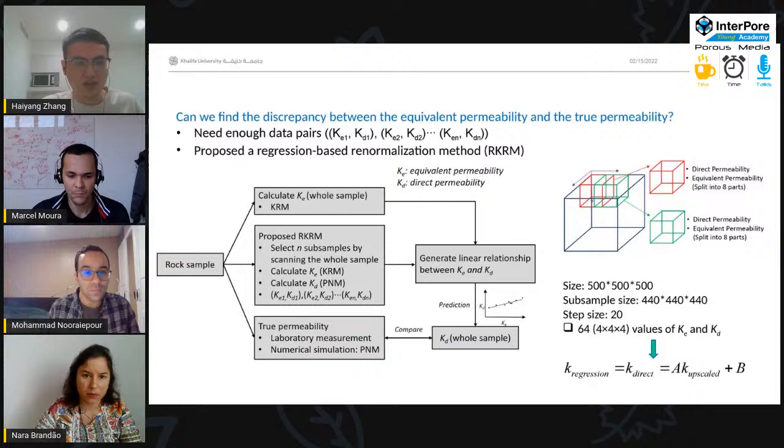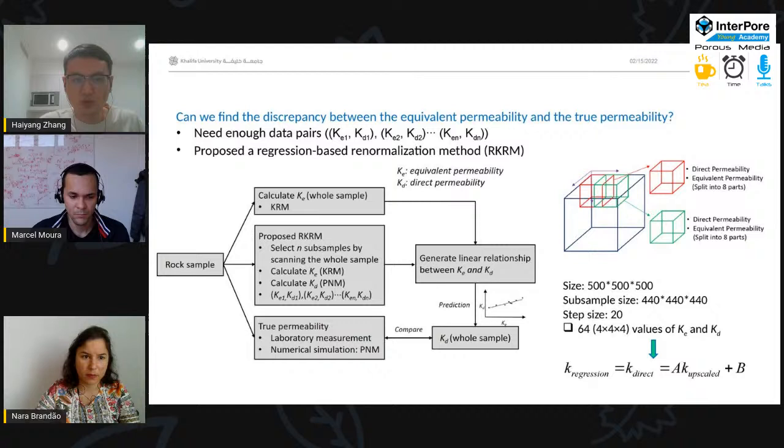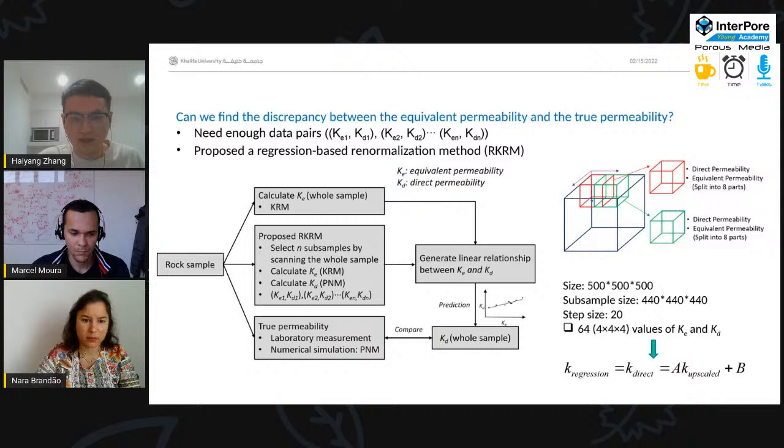So, we use these data pairs to generate the linear relationship between the KE and the KD. And we have the K equivalent, the equivalent permeability of the whole sample. And then we use this linear relationship to calculate the direct permeability. And we compare the results with the ones obtained by the laboratory measurement or numerical simulation.